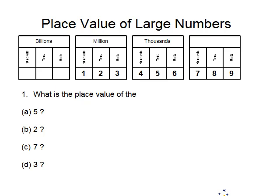This is the third video from the module Whole Numbers and Integers. In this video we're looking at the place value of large numbers. The first question is: what is the place value of the 5? We can see here that the 5 is in this position. The place value of the 5 is 5 ten thousands.